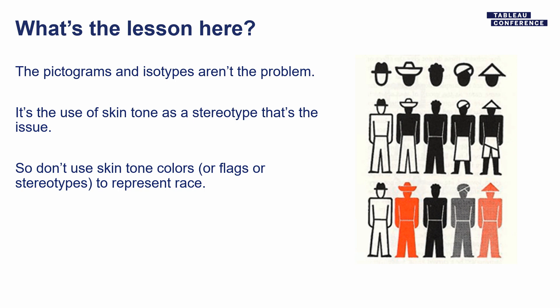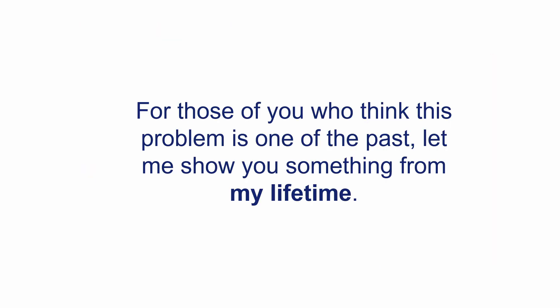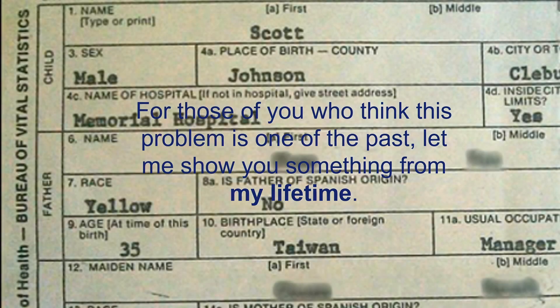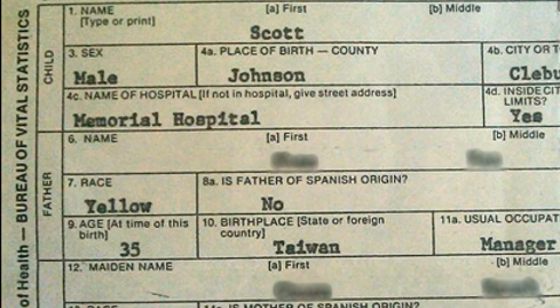I know it seems probably pretty obvious. But even if you think this is a really old concept, I want to show you something from my lifetime. This is a picture of a birth certificate from a little town near where I was born in Texas not that long ago. They still said the race was yellow. My birth certificate says my race is yellow, which is kind of weird. But that was pretty common in Texas and probably other states in the US.